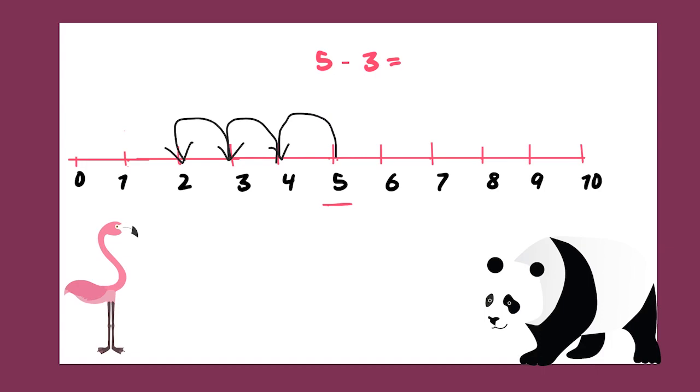So, what is our answer? We have 2. So, 5 minus 3 is equal to 2. Now, let's go to our next sum.